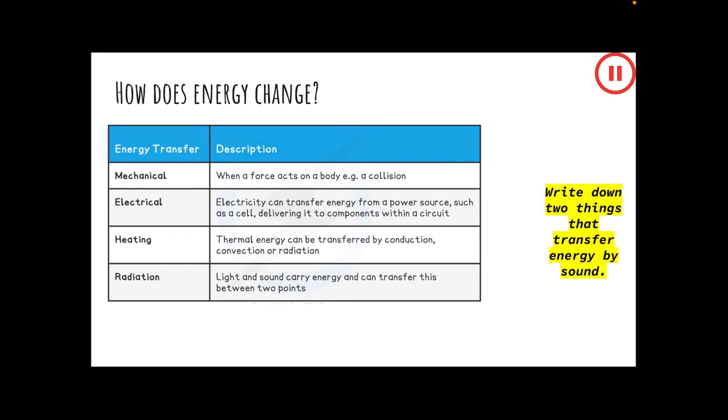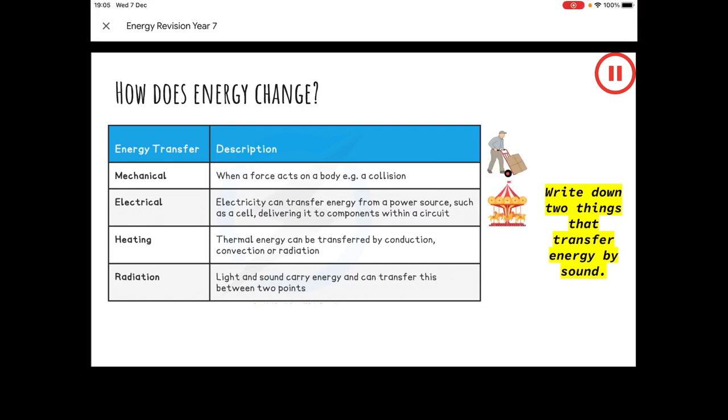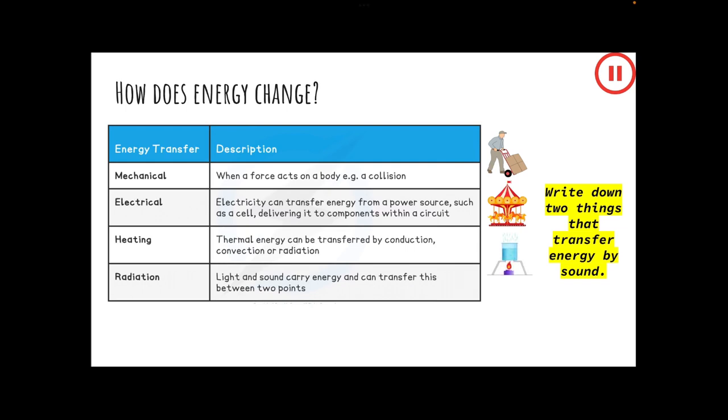Things happen when energy moves from one store to another. This can happen mechanically, when a force causes something to happen, by electrical transfer, for example, when energy in a fuel is transferred by electricity to power a fairground ride or other machine. Energy can be transferred by heating. When you use a pan or a kettle to heat some water, the chemical substances inside fireworks store energy. When the firework goes off, energy is transferred by heating and by light and sound.